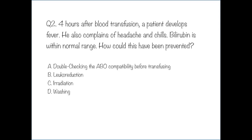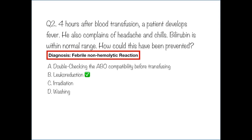Question number two. Four hours after blood transfusion, a patient develops fever. He also complains of headache and chills. Bilirubin is within the normal range. How could this have been prevented? Option A: double checking the ABO compatibility before transfusing. Option B: leukoreduction. Option C: irradiation. Option D: washing. The answer is leukoreduction. Fever within six hours of transfusion, along with chills and headaches, points towards febrile non-hemolytic reaction.